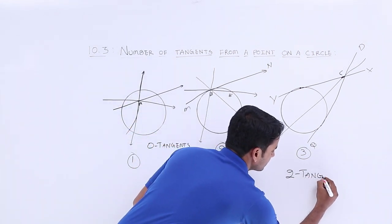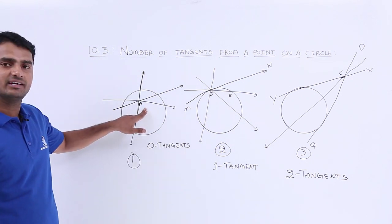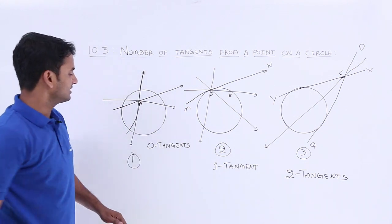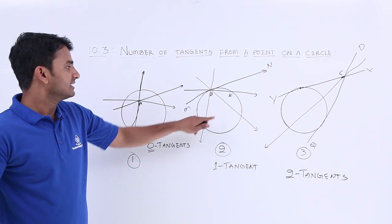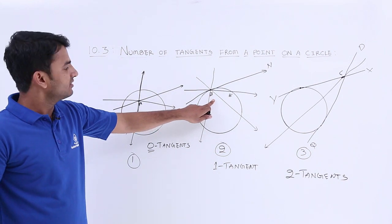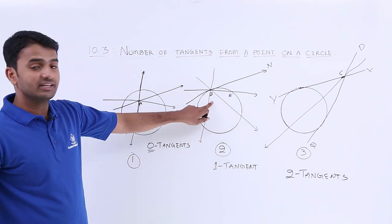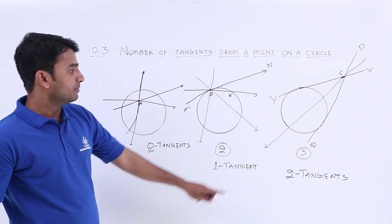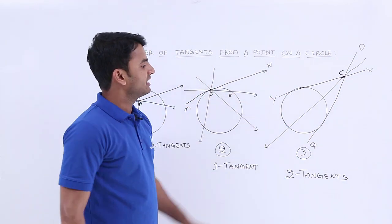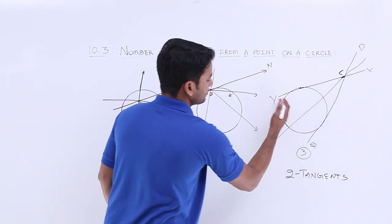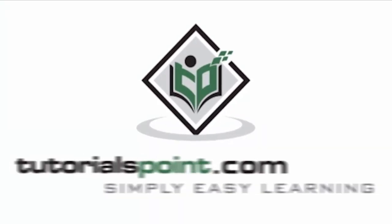To summarize: in Case 1, when the point is within the circle, we get zero tangents. In Case 2, when the point is on the circle at point B, we get only one tangent. In Case 3, when the point is outside the circle at point C, we can draw exactly two tangents, XY and PQ.